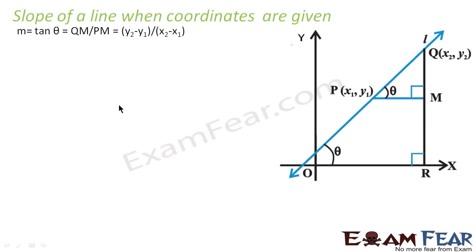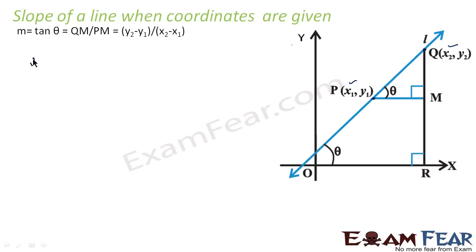Now if we have to find the slope of a line when coordinates are given — for example, we have points P(x1, y1) and Q(x2, y2) — we don't have θ directly. In this case, tan θ, which is the slope, will be (y2 − y1) / (x2 − x1). We can prove this.